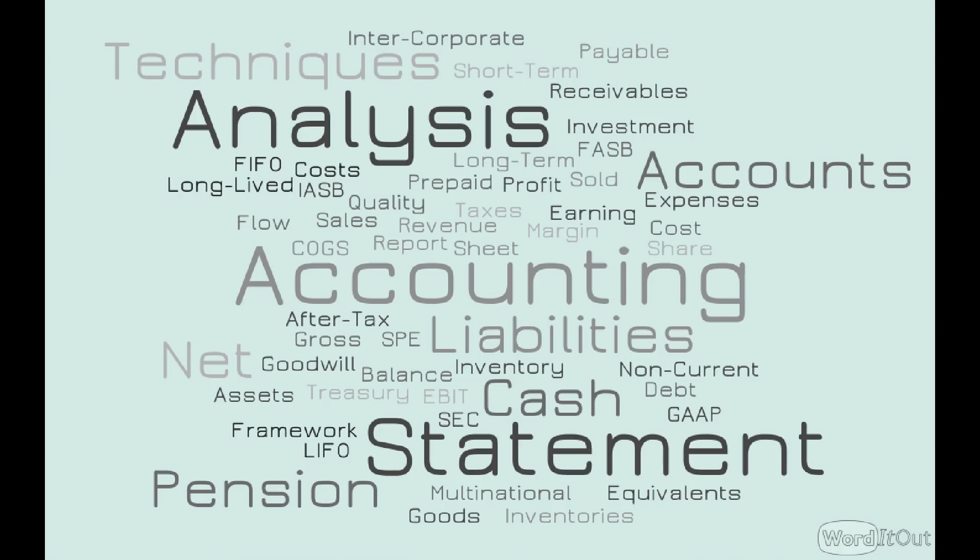Moving on to financial reporting and analysis — no surprise here, accounting is the number one word, and 'statement' is the other big word, which makes sense because you have your income statement, your cash flow statement, your balance sheet, FASB regulations, expenses, cost, cost of goods sold, and inventory. A lot of this is just accounting-based but seen through a financial perspective. You can see how all these words tie into financial reporting and analysis, which is the main topic here.